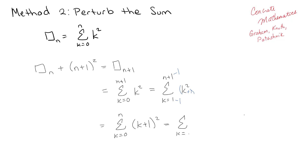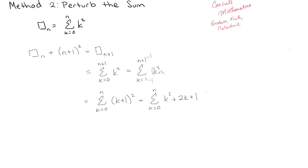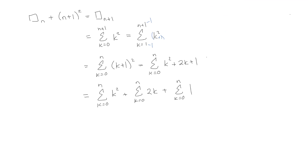All of these methods can be summarized as a flash of inspiration in a slightly different way. So what we can see here — I can write these summations out separately — so we get: the sum from k=0 to n of k², plus the sum from k=0 to n of 2k, plus the sum from k=0 to n of 1.